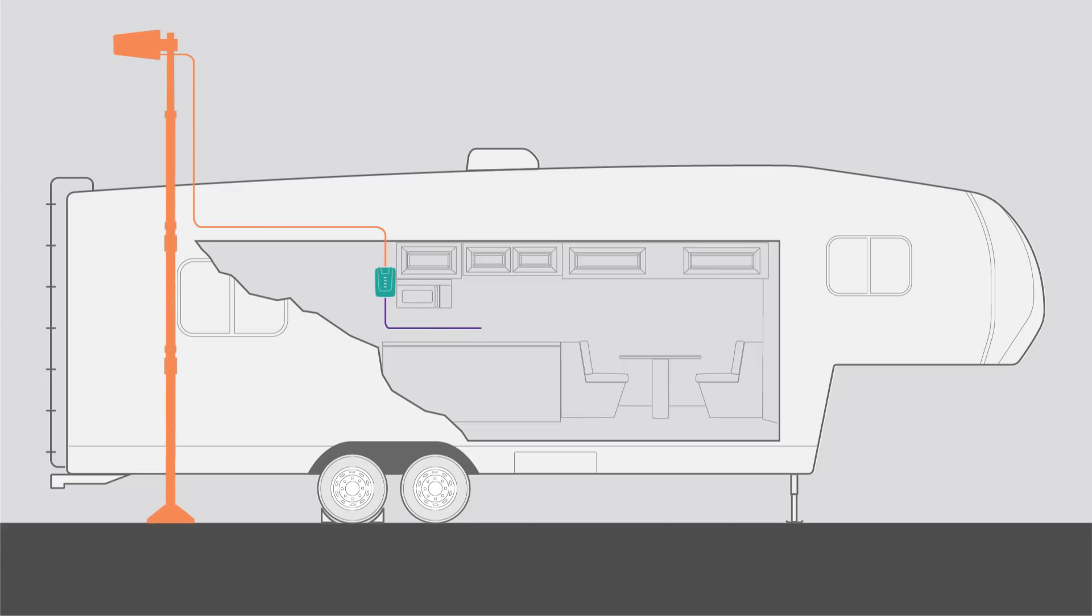WeBoost Cell Phone Signal Boosters work by capturing the signal outside of your RV using our high-gain antenna and then routing that signal to the cellular signal booster mounted inside your RV. The booster then amplifies the cellular signal and sends it to the inside antenna, which broadcasts that stronger signal inside your RV to all cellular devices on all carriers for all users simultaneously.